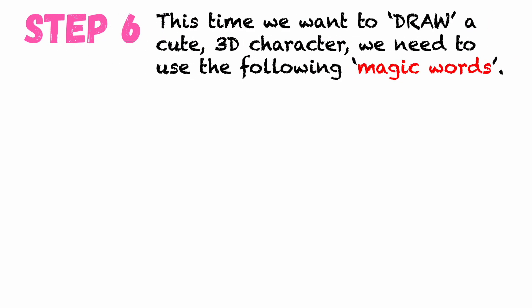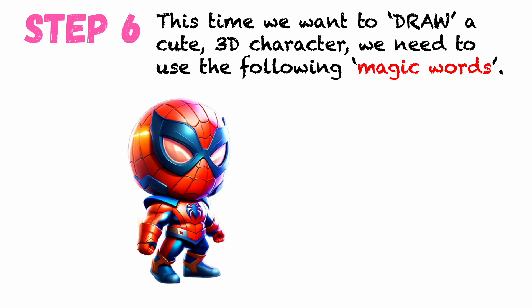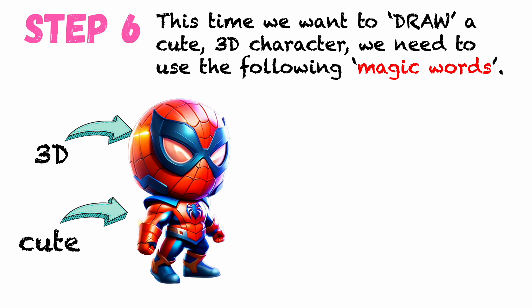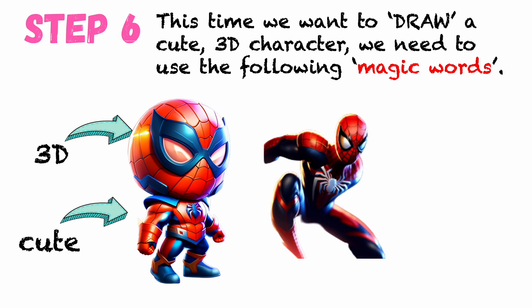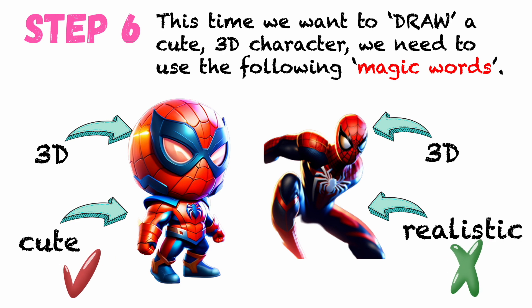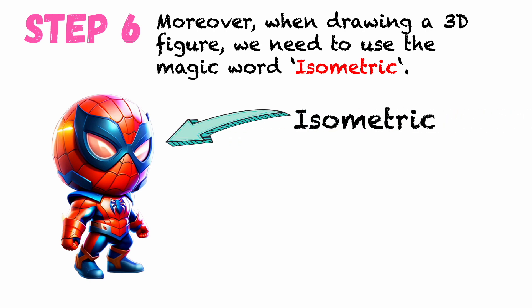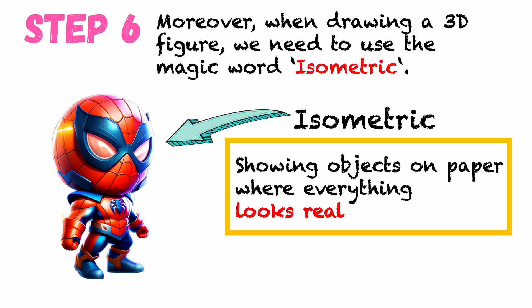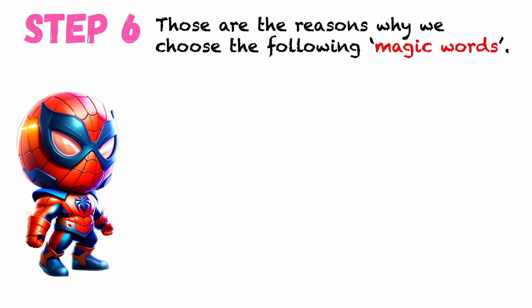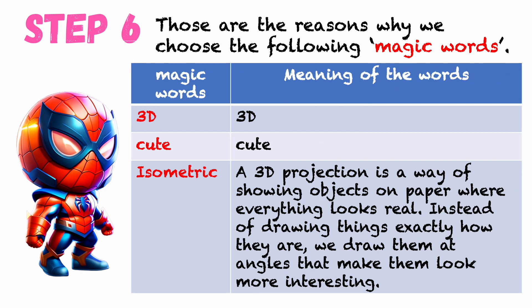This time, we want to draw a cute 3D character. We need to use the following magic words, especially the adjective 'cute,' because we do not want to draw Spider-Man in a realistic style. Therefore, remember to use the word 'cute.' Moreover, when drawing a 3D figure, we need to use the magic word 'isometric.' It is a special way of drawing 3D figures that makes everything on the paper look real.